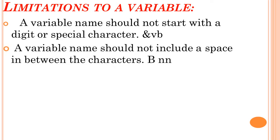Second limitation: a variable name should not include a space between characters. If you want to separate characters, use an underscore instead. For example, 'b n' with a space won't be considered one variable — the computer will treat 'b' and 'n' as separate variables. So use b_n with an underscore between them.